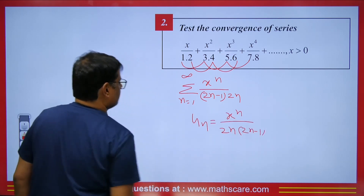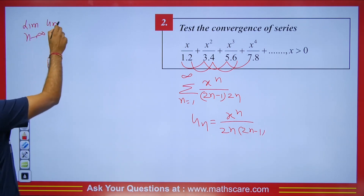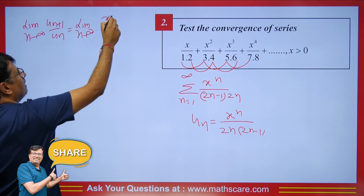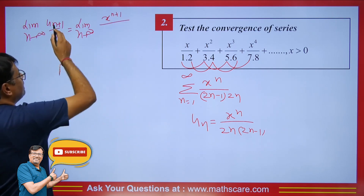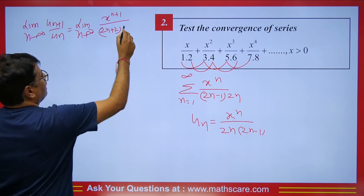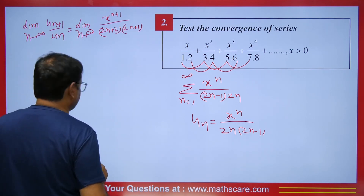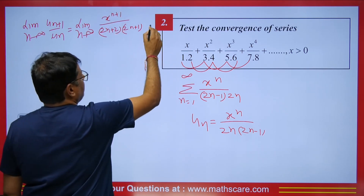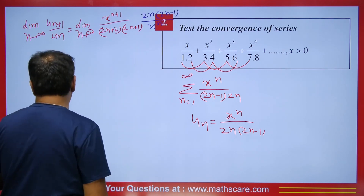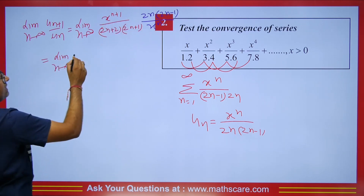We apply the ratio test: limit n → ∞ of u_{n+1}/u_n = limit of [x^(n+1) / (2(n+1)(2n+1))] divided by [x^n / (2n(2n-1))]. Cancelling x^(n+1) and x^n simplifies to x. Taking n common from the remaining factors, the n² terms cancel, and as n → ∞ all 1/n terms go to 0.